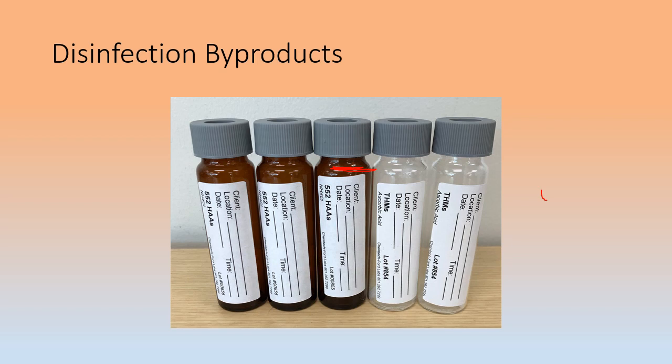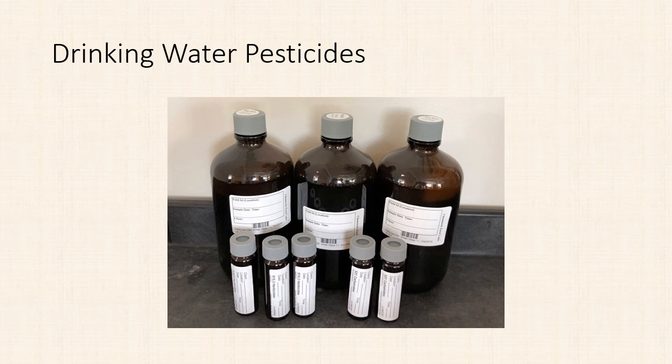The drinking water pesticides is divided into four different tests, so you'll have eight bottles, all amber, so there's no headspace requirement. But fill them as full as you can. For the big liter bottles, fill them at least to the marked line. For any 40-milliliter vials, filling without headspace is cheap insurance. We won't reject pesticide samples for headspace because these are not volatiles.